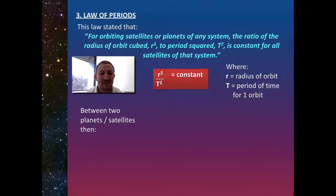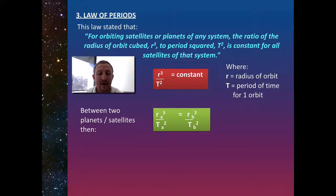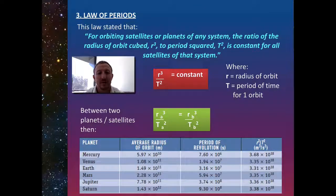Between two planets or satellites, we have this situation where on one side we've got the third law for planet A, and on the second side, the third law for planet B. They should equal each other or be within a very small range.